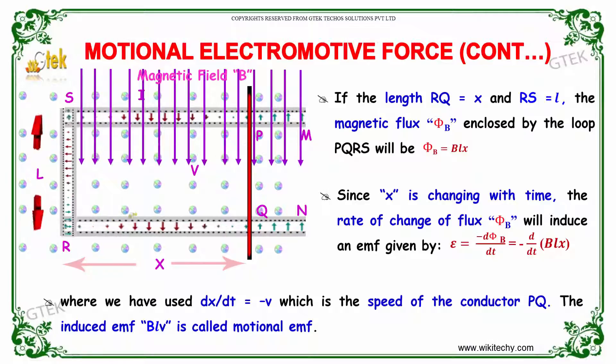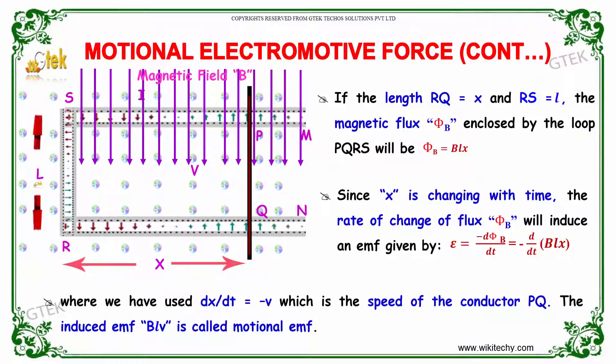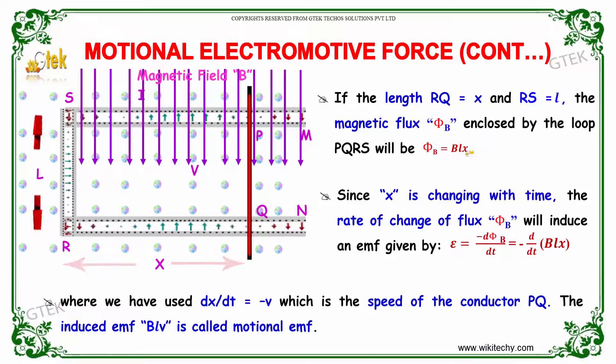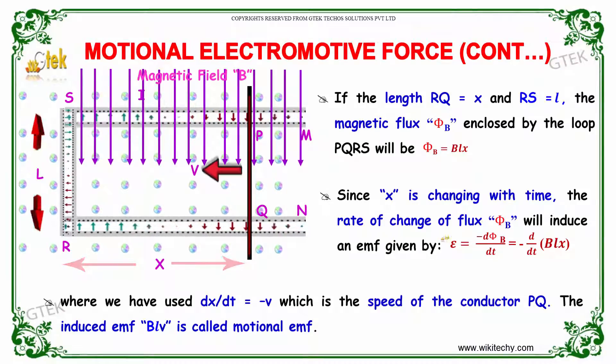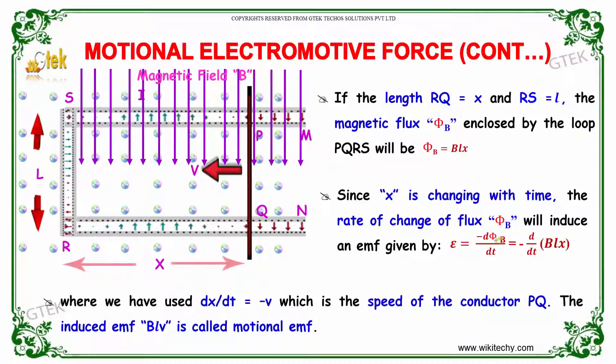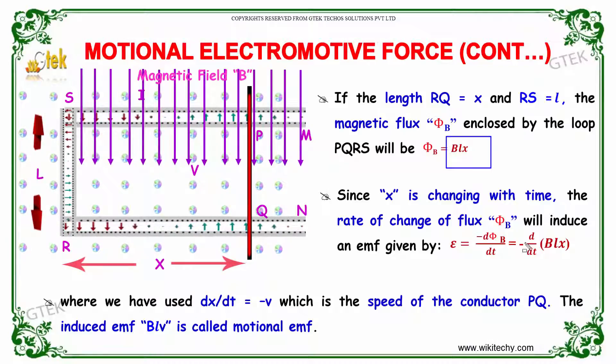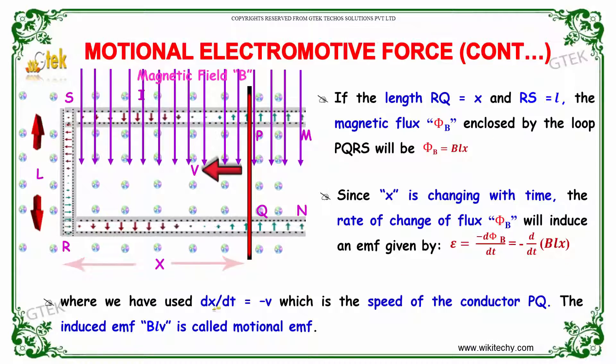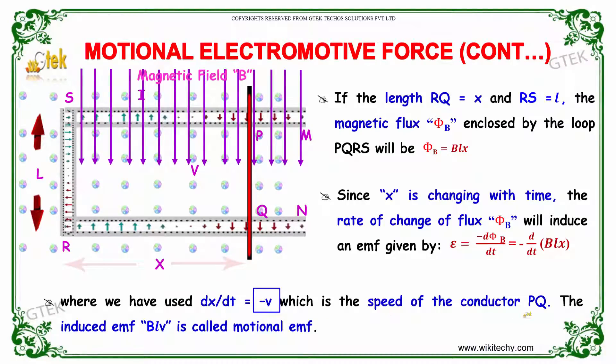If the length RQ is equal to X and RS is equal to L, the magnetic flux phi B enclosed by the loop PQRS will be phi B equals B into L into X. Since X is changing with time, the rate of change of flux phi B will induce an EMF given by epsilon equals minus d phi B divided by dt equals minus d by dt of B into L into X, where we have used dX by dt equals minus V, which is the speed of the conductor PQ. The induced EMF B into L into V is considered as Motional EMF.